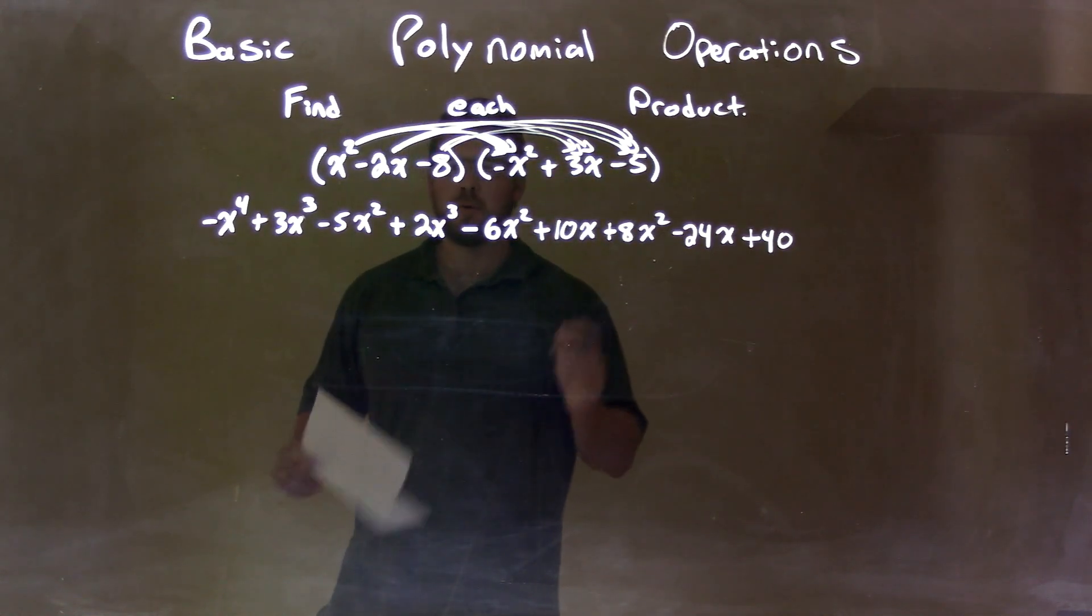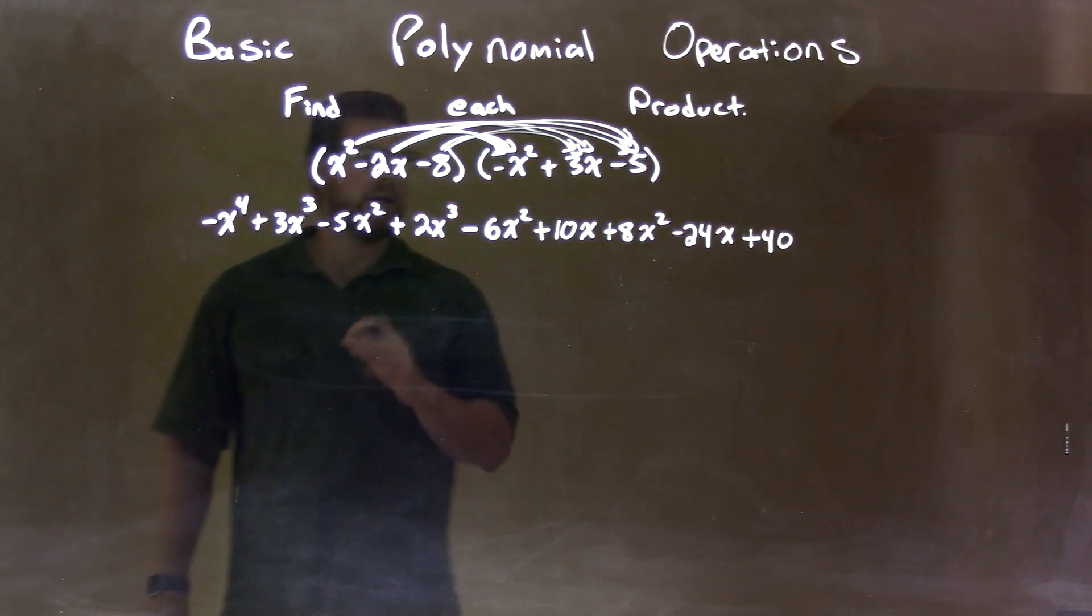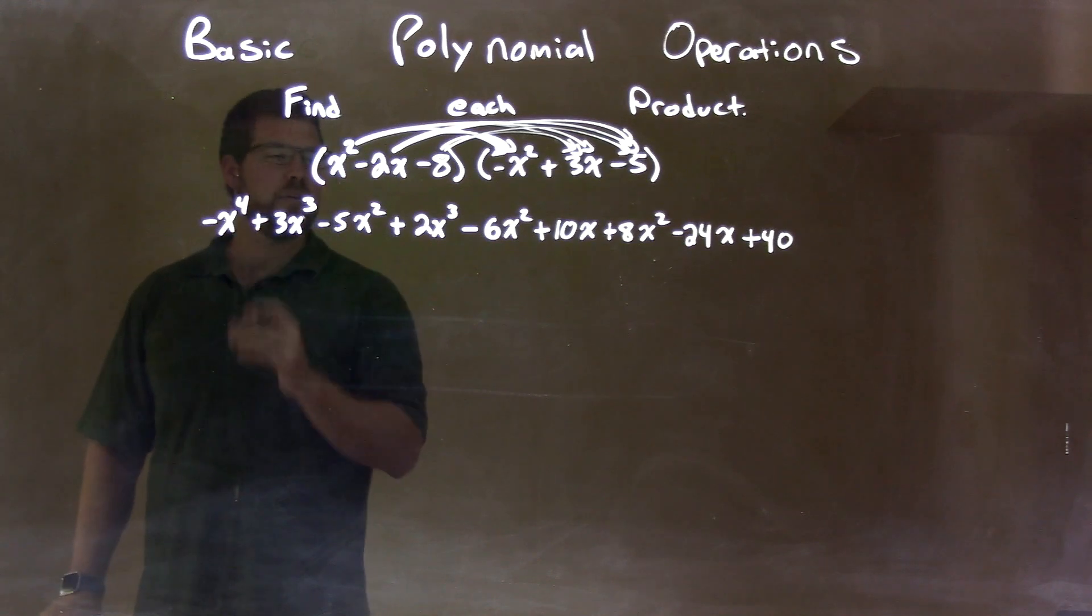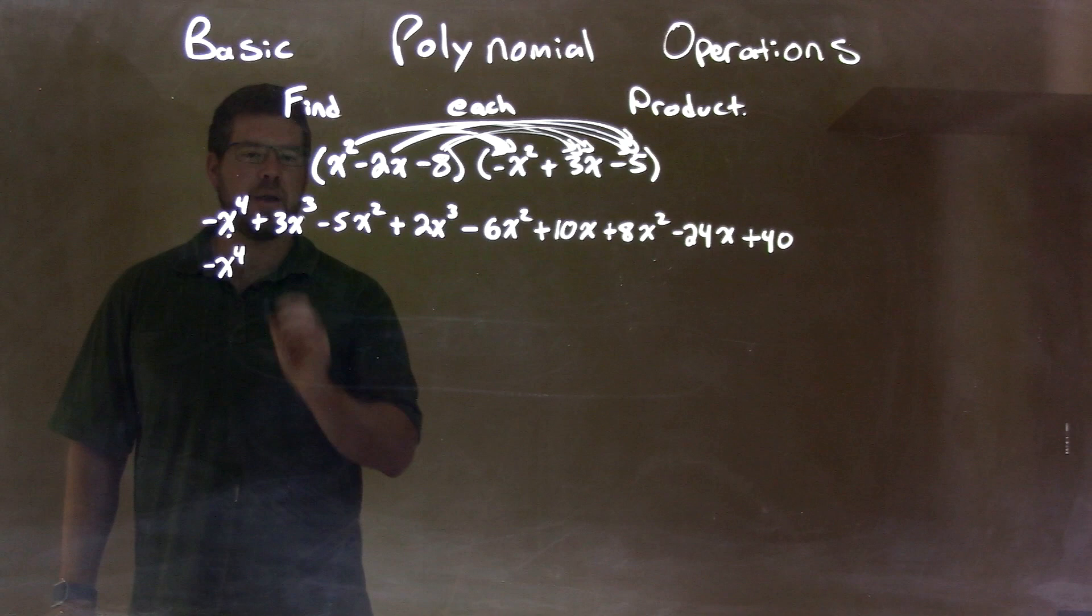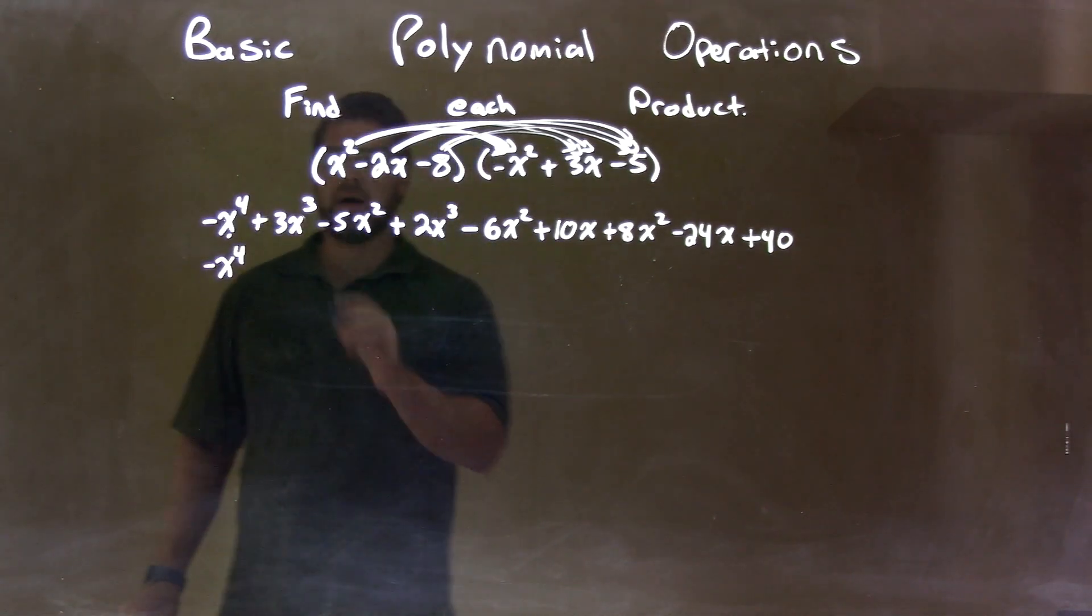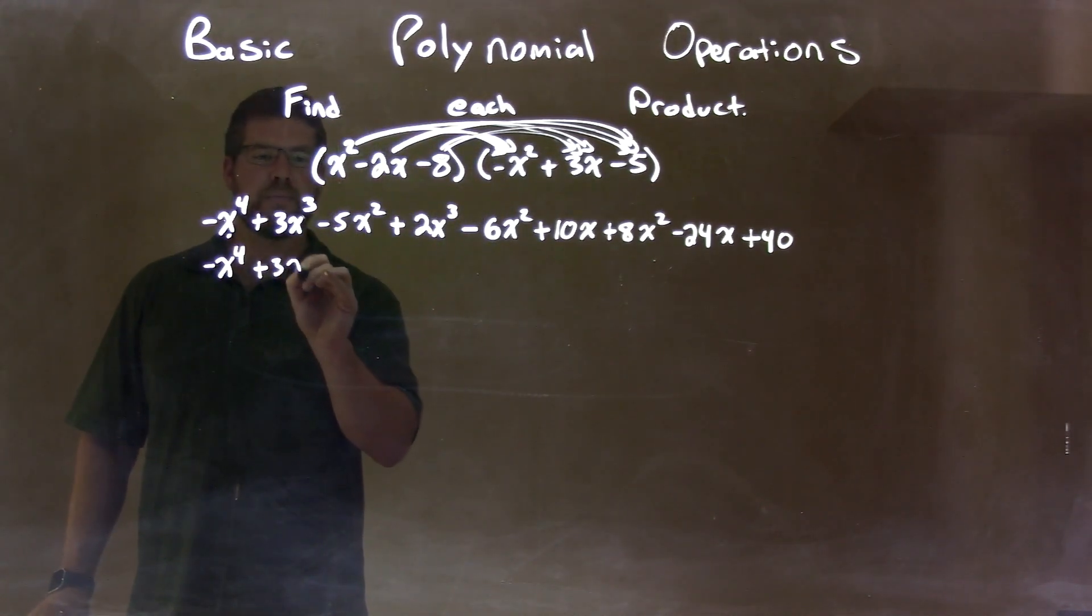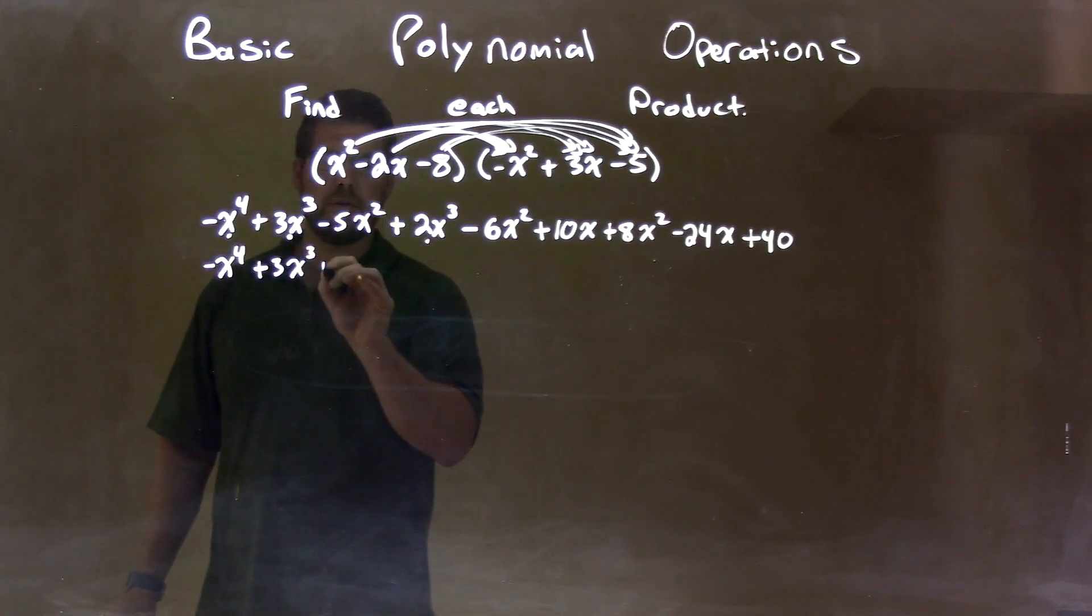So, now, what I'm going to do is rearrange to have all my like terms next to each other. The highest degree is the fourth power. So, we just bring down the negative x to the fourth power. I put a little dot showing that I brought that down. Now, the third powers. We have plus 3x to the third right here, and I bring down plus 2x to the third as well.